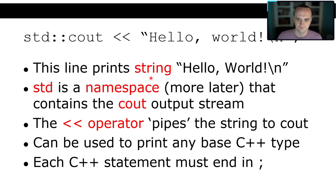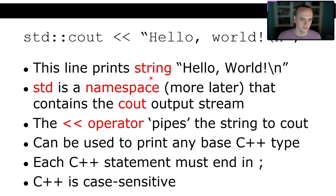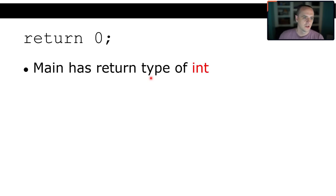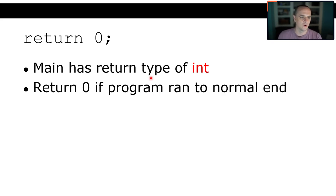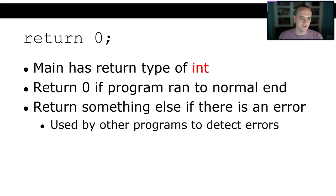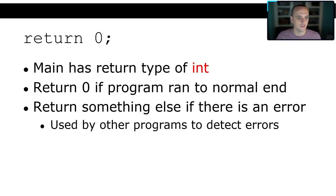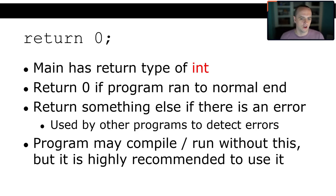The final line is 'return 0'. The main function has a return type of int, and when your program executes successfully, you return zero. If there's an error, you return something other than zero. That return value gets returned to the console or system, and other programs that launch your program can use it to know whether execution was successful. For example, negative one might mean a file couldn't be found. The program can compile without a return, but it is highly recommended to use one.